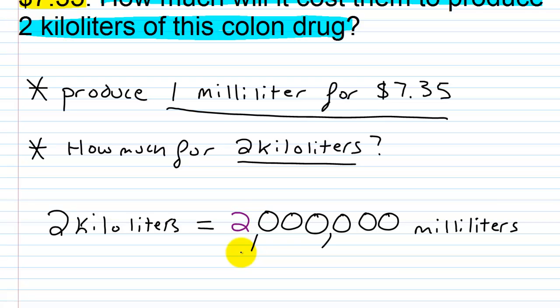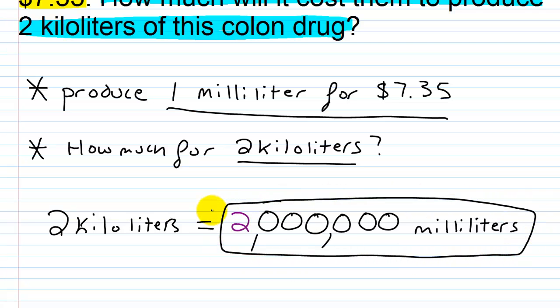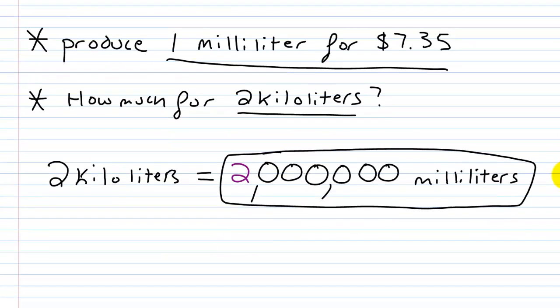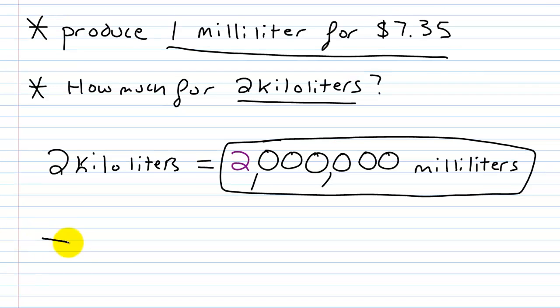Now we know that each milliliter costs $7.35. So all we need to do is multiply two million times 7.35. That's going to give us the cost for two kiloliters. So 7.35 times two million.